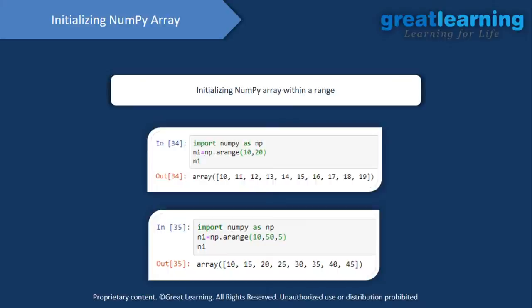Even if you haven't watched earlier sessions, you can watch this one because we're covering the basics of NumPy, Pandas, and Seaborn, then combining those techniques for exploratory data analysis on the Game of Thrones dataset. Darshan is asking about feature engineering — whenever you're working with a dataset, consider all your columns as features. Not all features are important when building a model, so feature engineering helps you extract only those features which are relevant to your problem statement and which would give better accuracy.